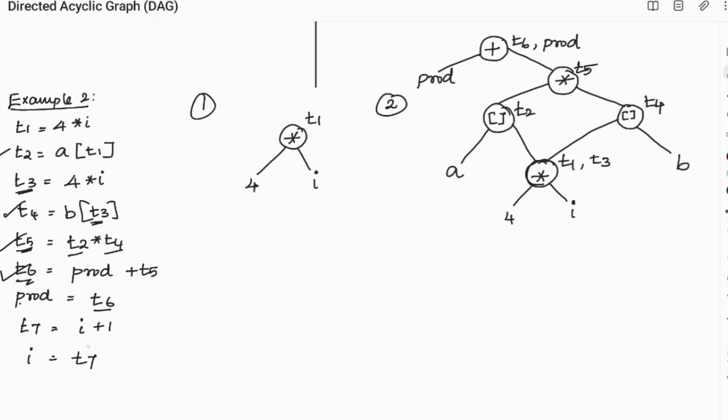Next we have to do i plus 1 gets assigned to t7. Here in our DAG we already have i. So we are summing i with 1 and assigning it as t7. So this step is over.